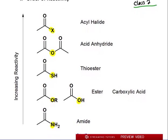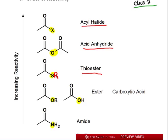The trend of reactivity runs from most to least reactive. The acyl halide — a halogen such as chlorine or bromine on the carbonyl carbon — is the most reactive. Next is the acid anhydride, where a carbonyl touches a carboxylic acid group, giving a C-O-O arrangement. Following that is the thioester, which has a sulfur in place of oxygen. Note: SR gives a thioester; SH gives a thio carboxylic acid.